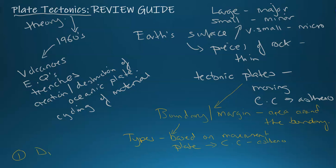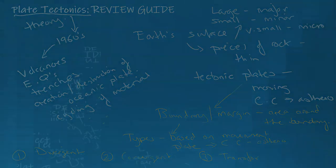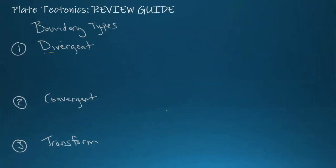The types are divergent, convergent, and the third one is transform. Breaking down the word, in terms of the movement, the plates are going away from each other. It's where the plates are constructed, so we call this a constructive plate boundary, and the basalt is formed.